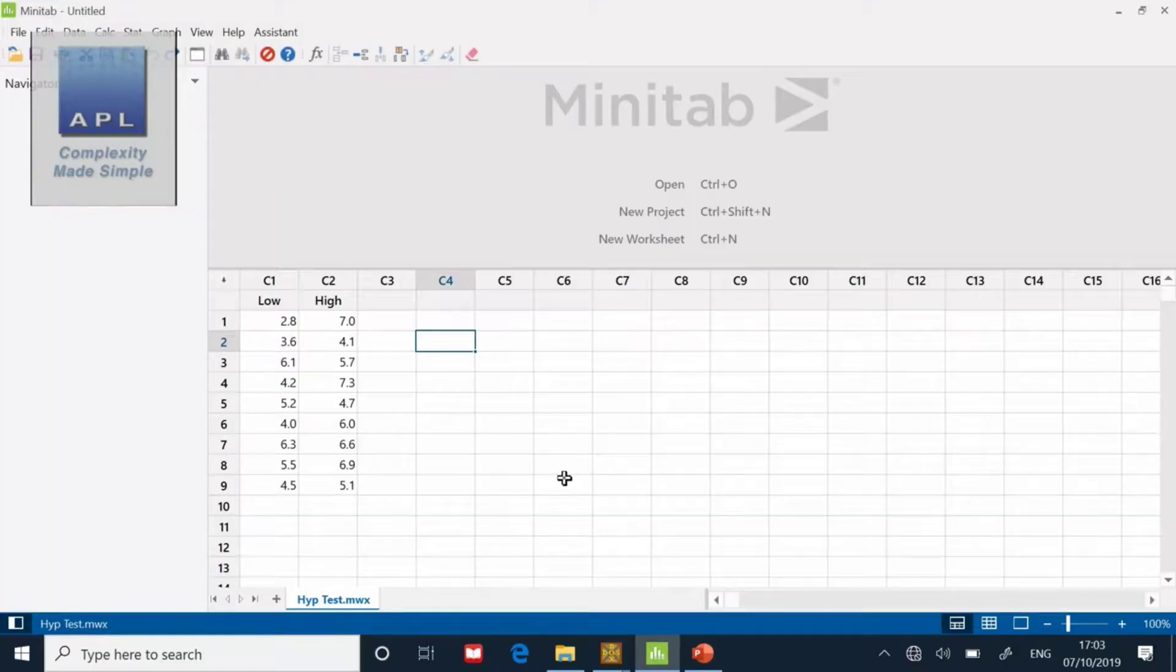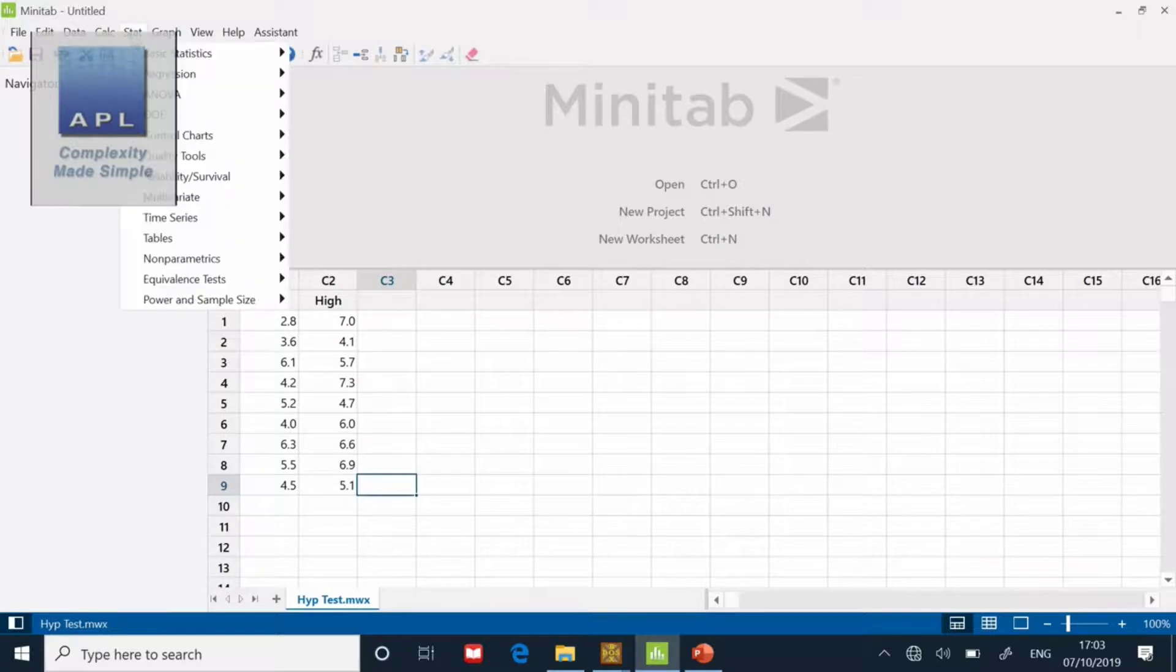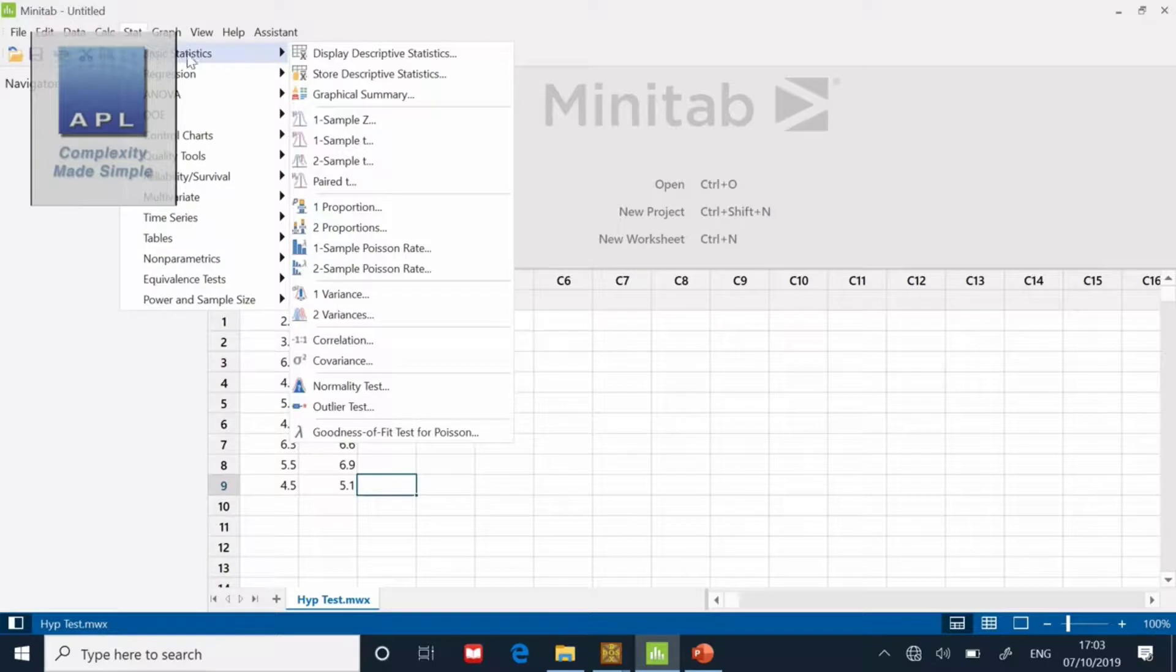So here is the data from the low temperature, here is the data from the high temperature. So both our data sets are in separate columns. Then very simply, up to Stat, Basic Statistics, and in the Basic Statistics menu we have the Two Sample T.